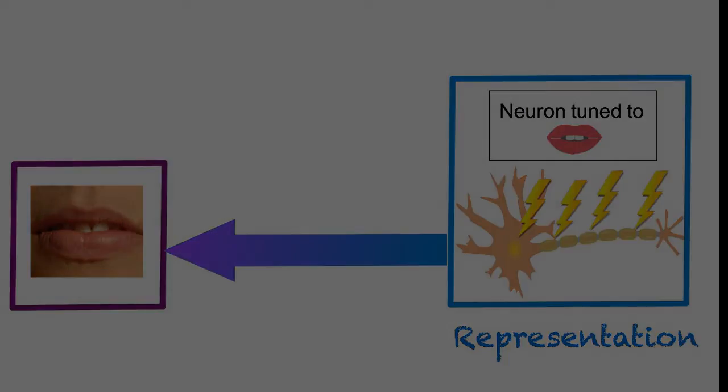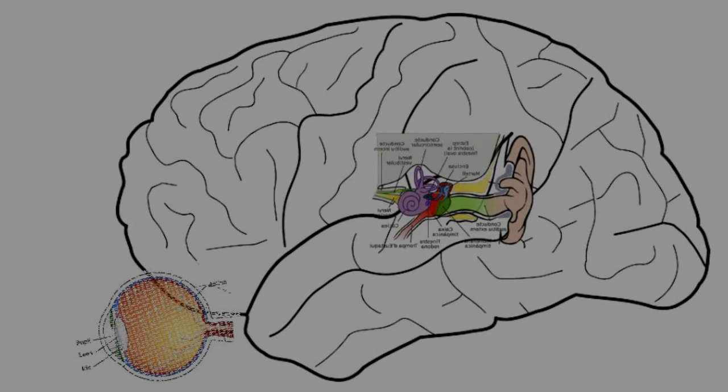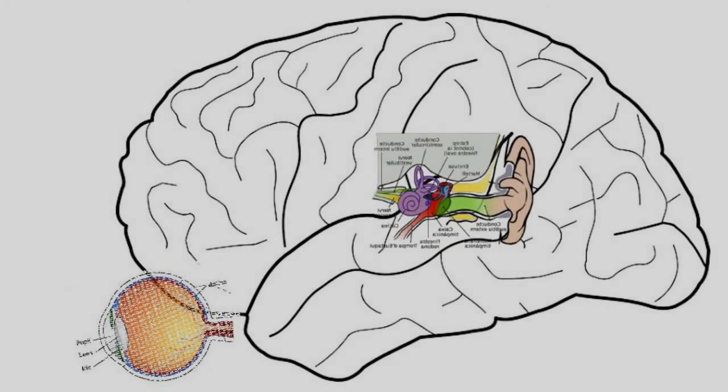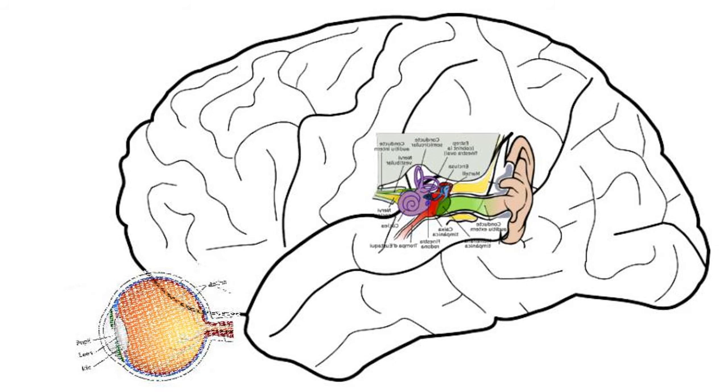Tuning begins at the sensory organs that provide the input to the brain, such as the eyes and ears. In neurons, tuning comes from the connections it receives from other neurons.